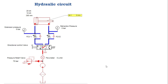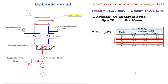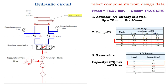Using the design data book, select components for the given application. The actuator A4 has already been selected. Next, select pump P3, which is constrained to a maximum pressure of 70 bar and selected based on flow rate. For the reservoir, the capacity equals 3 times the maximum flow rate, giving 42 liters — so select tank T2 from the design data.